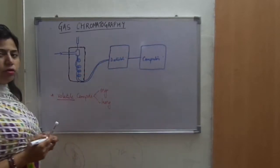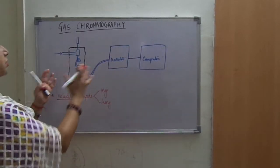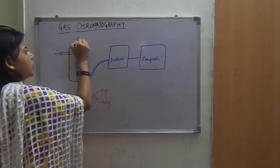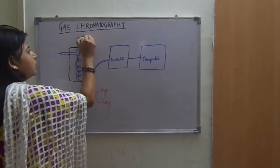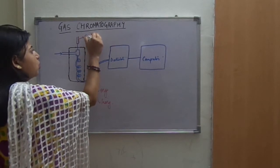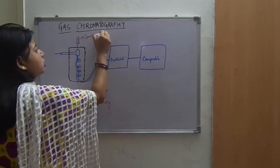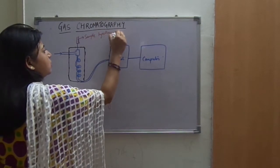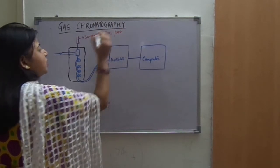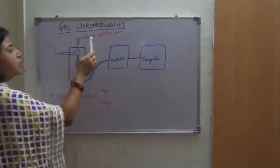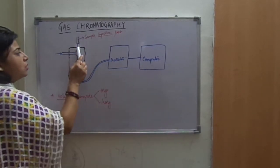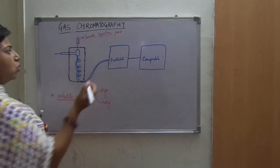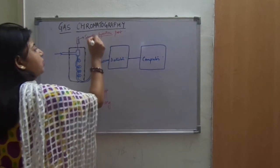I have already drawn the overall circuit diagram of gas chromatography so that we can understand it. A very small amount of sample is injected from a port — this is the sample injection port. From the injection port we can understand that the amount of sample used in gas chromatography is very small. The amount of sample is 1 microliter.